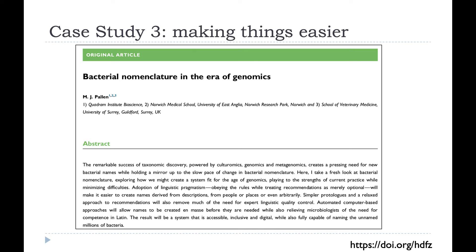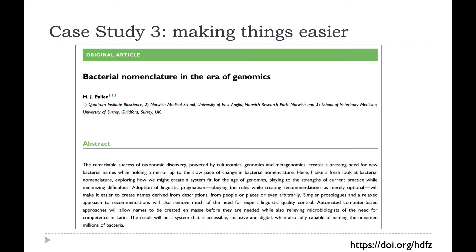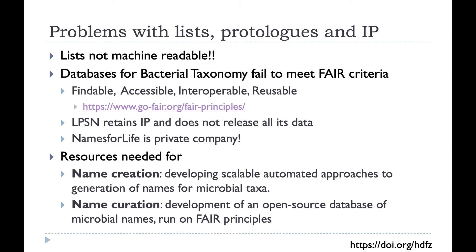While ruminating on this problem, I wrote a piece on linguistic pragmatism — how do we make things simpler and easier? The idea is that we obey the rules but treat some recommendations as merely optional and adopt simpler approaches. One problem is that the resources we have are not great: names of new species are published in lists, but those lists are not machine-readable, containing all sorts of superscripts and notes, making it very hard to parse that data into something useful.